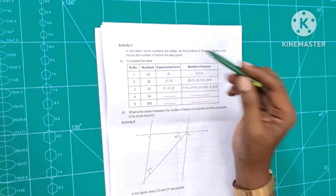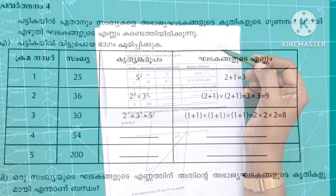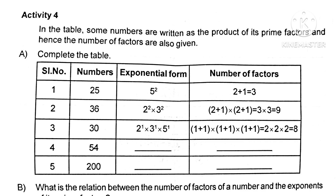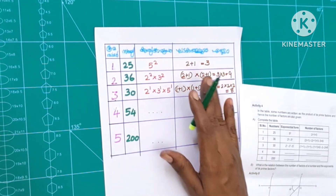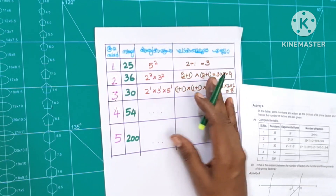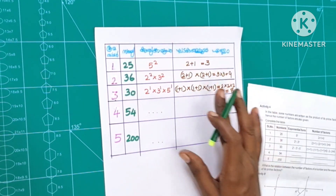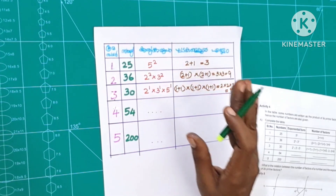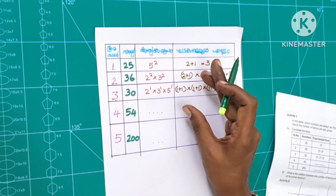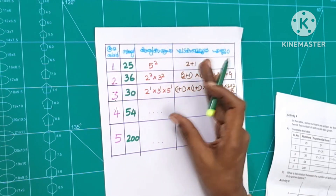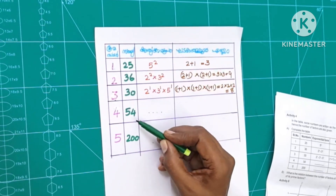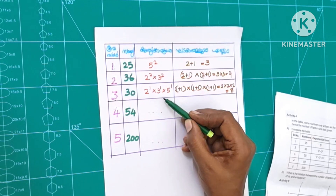The next item is Activity 4. In the table, some numbers are written as the product of its prime factors, and hence the number of factors are also given. Complete the table. We have to take a look at the teacher's table — this is the serial number, this is the numbers, this is the exponential form, and that is the number of factors.